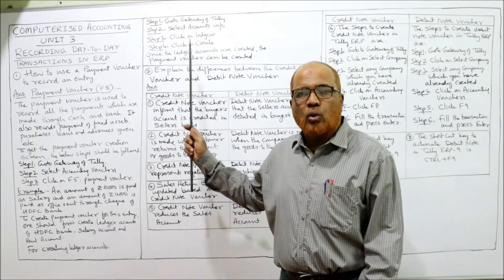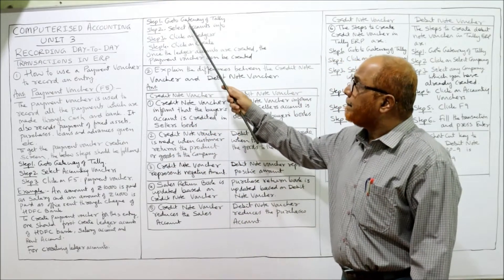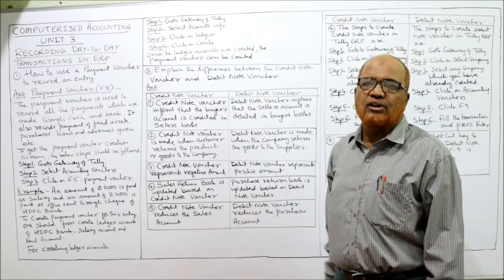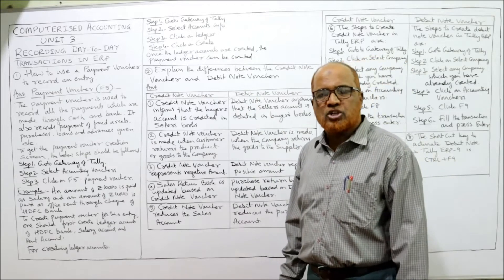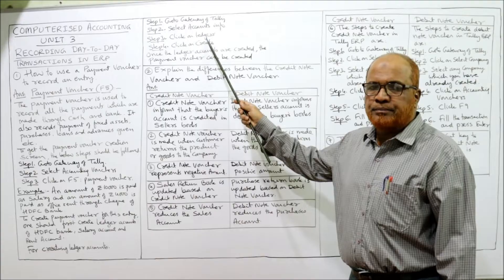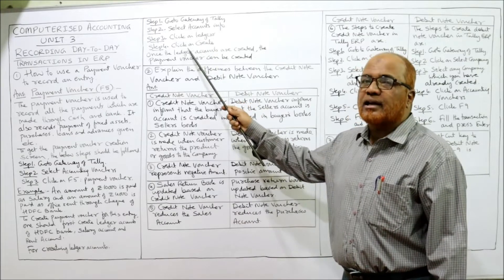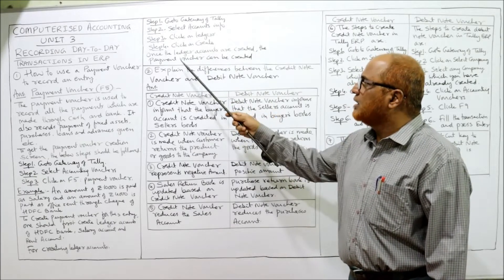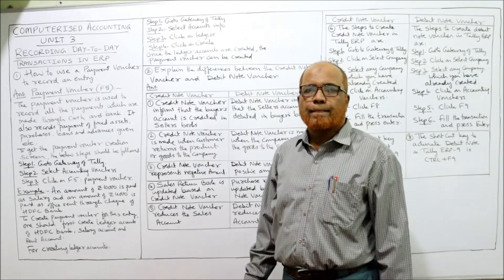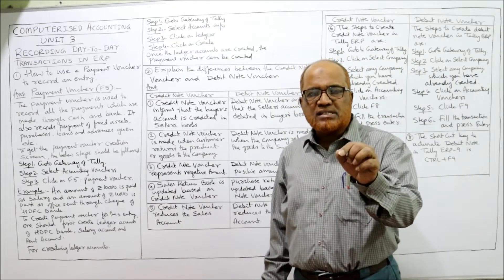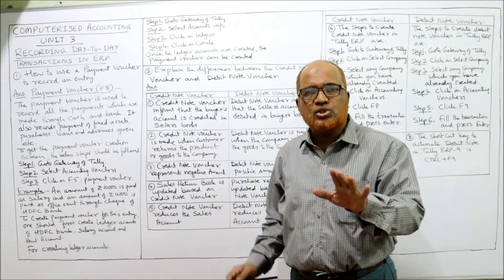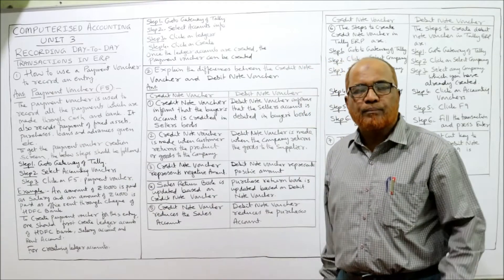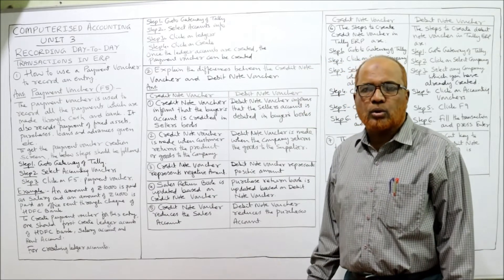To create ledger accounts, go to Gateway of Tally, select Accounts Info (accounts information), click on Ledgers, then click Create to create each ledger. Once the ledger accounts are created, the payment voucher can then be created. You must have the ledger accounts ready before entering any payment voucher.